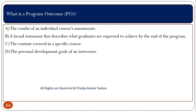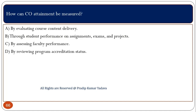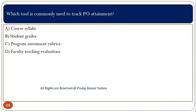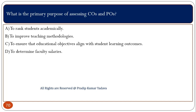What is a program outcome? A program outcome is a broad statement that describes what graduates are expected to achieve by the end of the program. How can CO attainment be measured? CO attainment is measured through student performance on assignments, exams, and projects. Which tool is commonly used to track PO attainment? Here we use program assessment rubrics. What is the primary purpose of assessing CO and PO? Basically, to improve and to ensure that educational objectives align with the student learning outcomes.